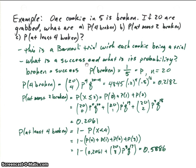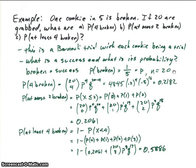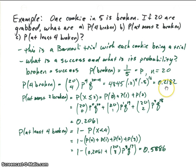What is a success and what is its probability? Since all the questions ask about broken cookies, we'll define broken as success. The probability of a broken cookie is one-fifth, so p equals 0.2. The number of trials is 20, and q is four-fifths, or 0.8. The probability of exactly four broken cookies out of 20 is: 20 choose 4 times p to the 4 times q to the 16, which equals 4,845 times 0.2 to the 4 times 0.8 to the 16, giving us 0.2182.